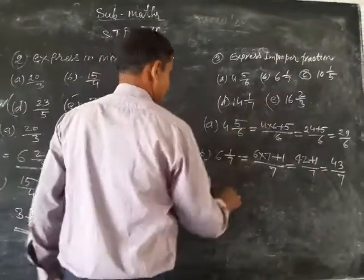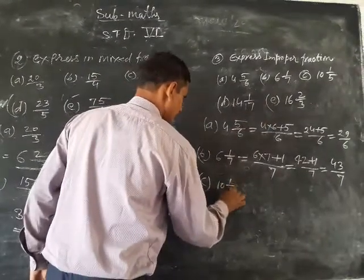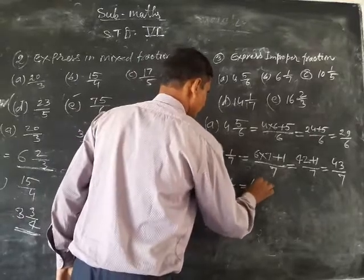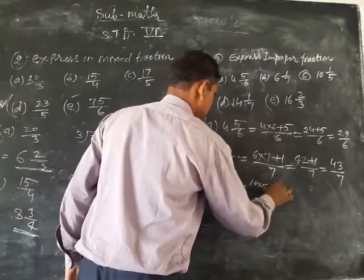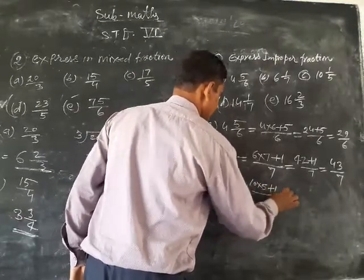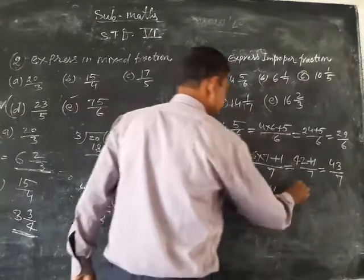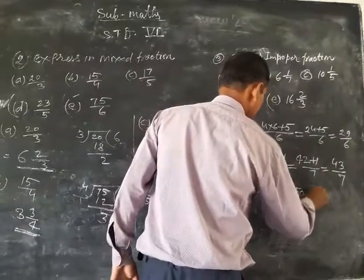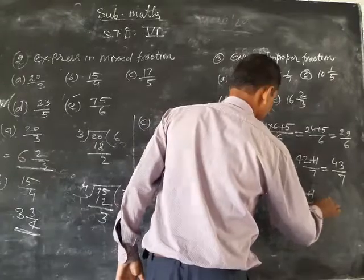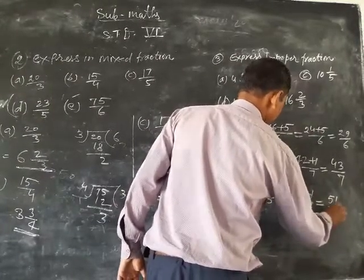Part c: 10 and 1 upon 5 equals 10 into 5 plus 1 upon 5. So 10 times 5 is 50, plus 1 upon 5, equals 51 upon 5.